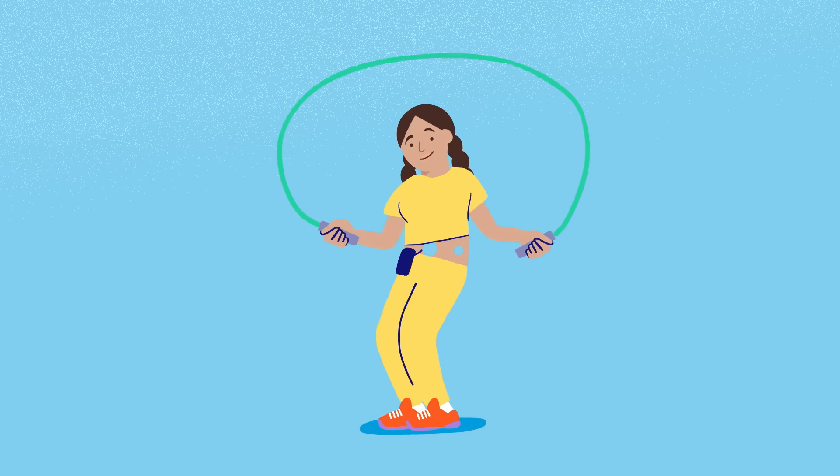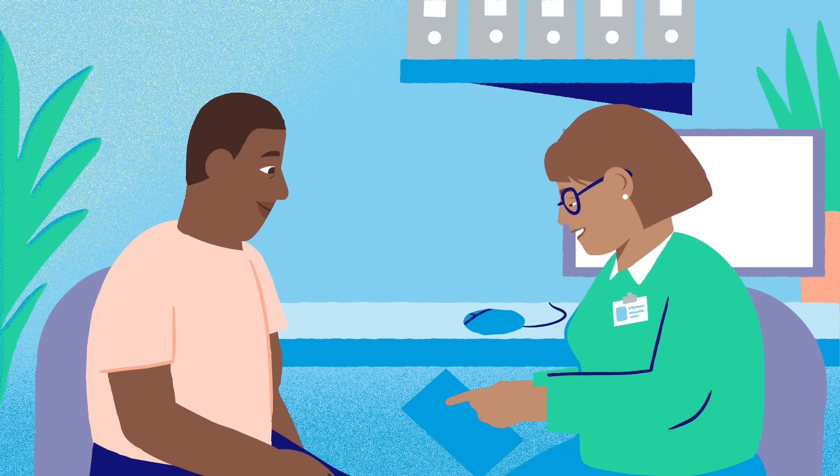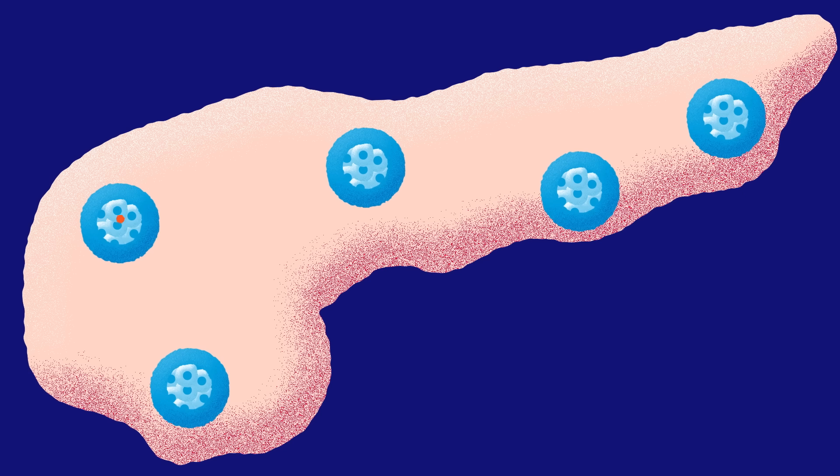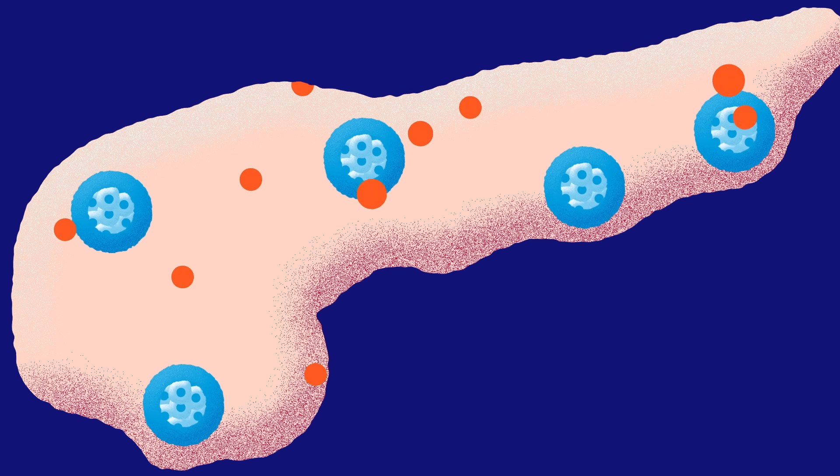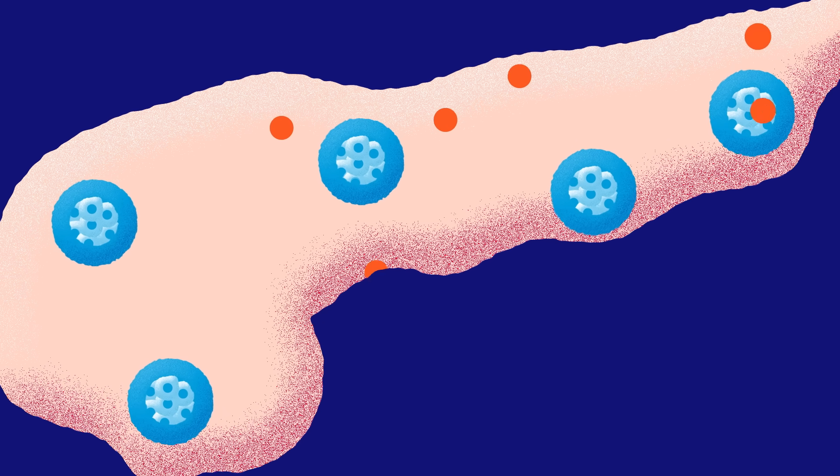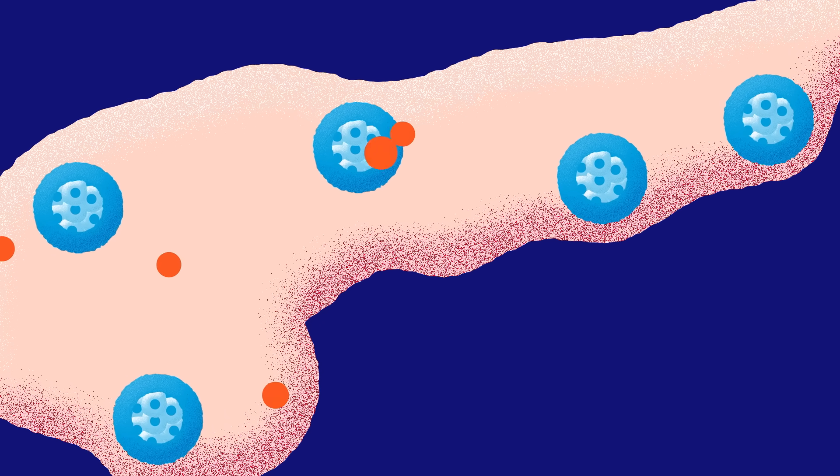Stage 2: Zach has just been diagnosed with type 1 diabetes. At this point, the immune system hasn't yet wiped out all of Zach's beta cells. Up to 30% of them could still be alive.